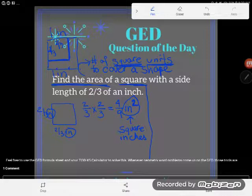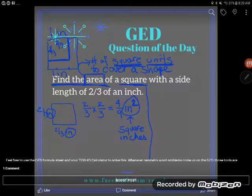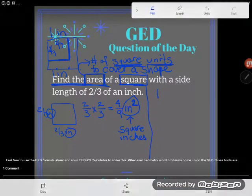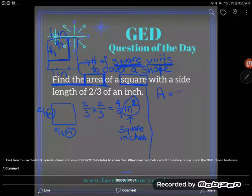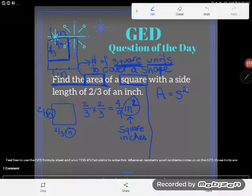Let the formula sheet guide you. If you go look at the formula sheet, and you look in the area section, you'll see a formula for area of a square. Looks like this: A equals S with a little floating two. One of the interesting things you should know is that the way you read this little floating two is the word squared.